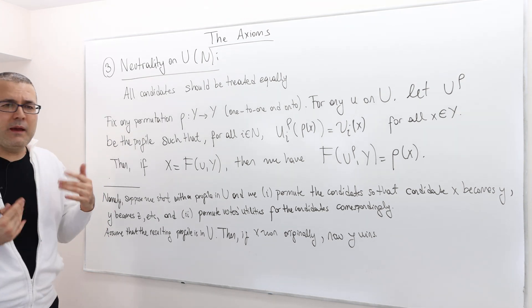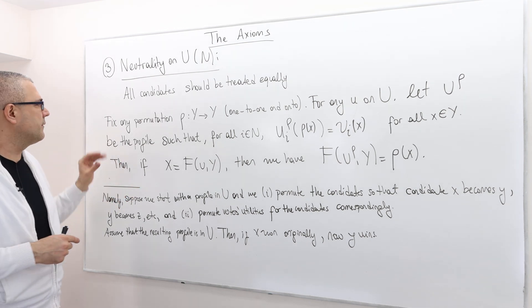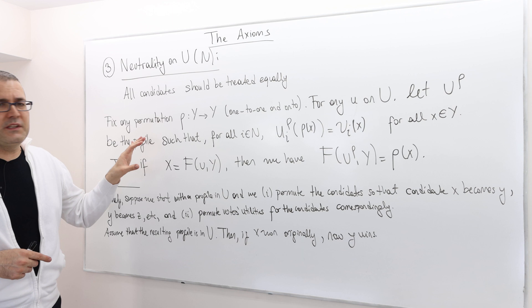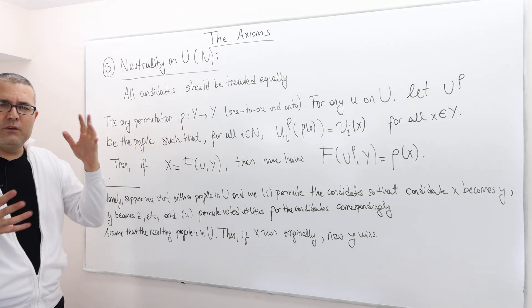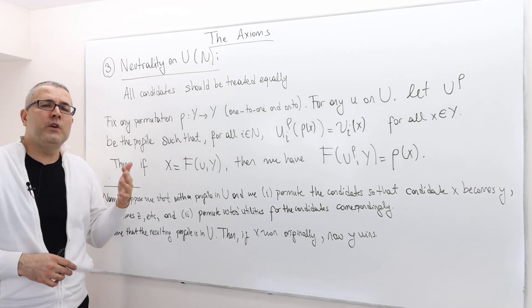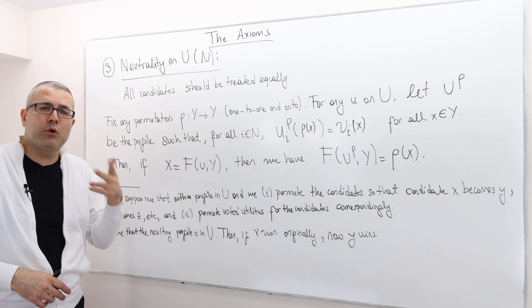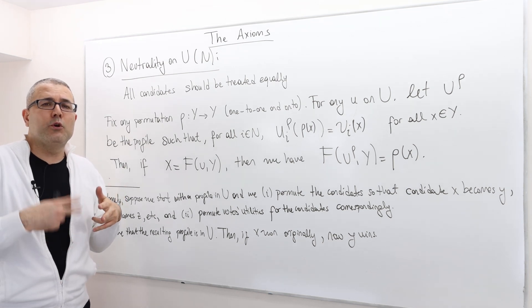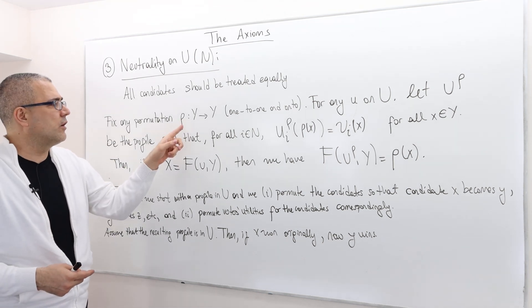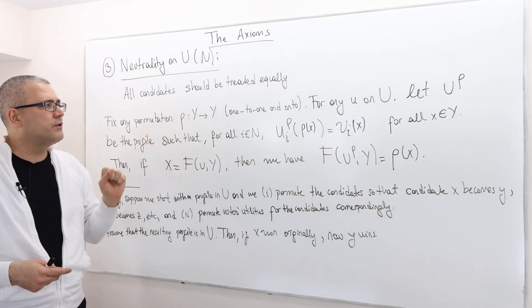How do we mathematically describe this? The description is very similar to anonymity. Fix any permutation, rho. I'm going to use a different notation than pi, because pi was the permutation where we used to permute the voters. Here, rho is the permutation we use to permute the candidates. So rho is from y to y. It's a one-to-one and onto function.